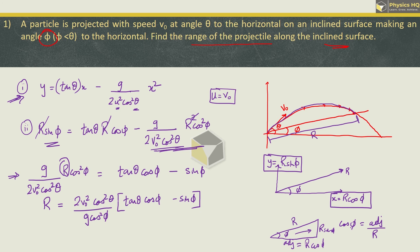Now what we can do is 1 cos theta. So we got r is equal to 2 v0 square cos theta divided by g cos square phi.